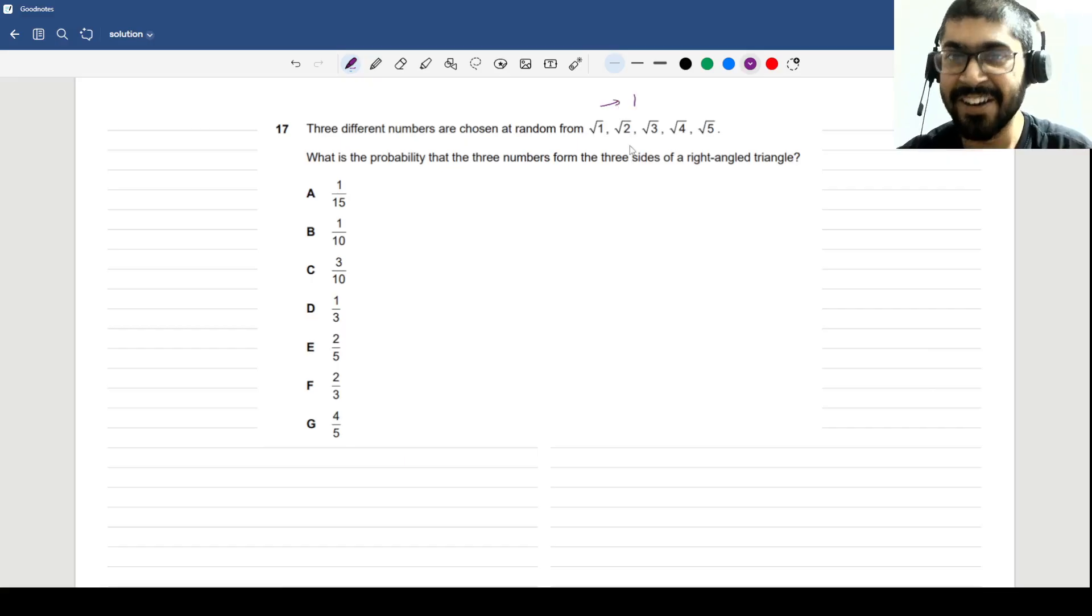Now these numbers are not given randomly, there is a thought behind this. √1 is basically 1, and then √2, √3 are irrational, and √4 is 2. Despite us knowing that the square roots of 1 and 4 exist, we have kept it. What is the probability that three numbers from these five form the sides of a right angle triangle? Right angle triangle is very specific because there is a condition using the Pythagorean theorem.